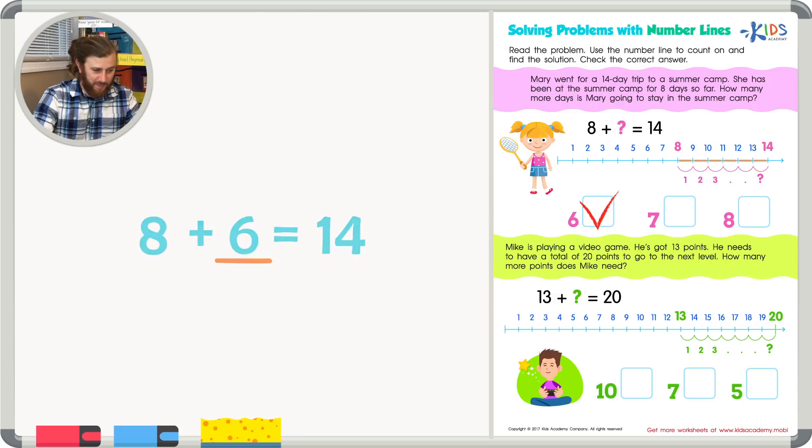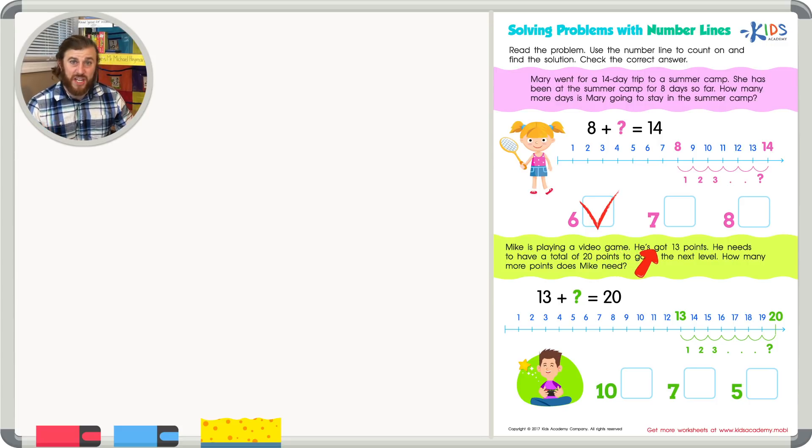Let's take a look at our second example. Mike is playing a video game. He's got 13 points. He needs a total of 20 points to get to the next level. How many more points does Mike need?